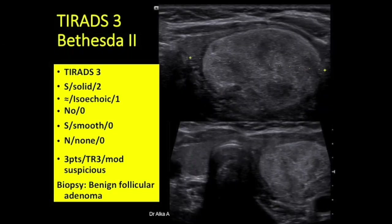Next case: a large iso- to hyperechoic solid nodule with smooth, well-defined, rounded margins. Solid: two points. Isoechoic: one point. Not taller than wide. Smooth margins: zero. No calcification: zero. Total: three points, TR3 — moderately suspicious. Biopsy: benign follicular adenoma.